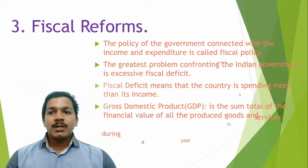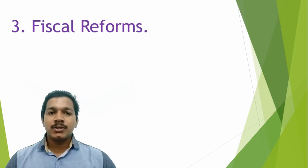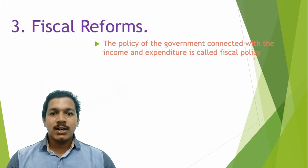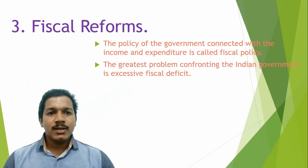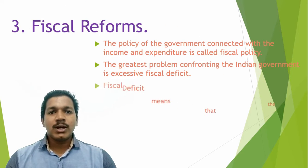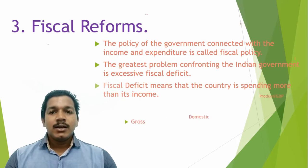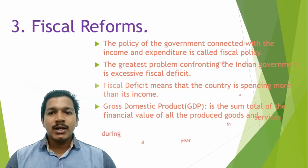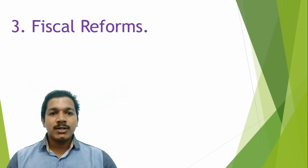Fiscal deficit means the country is spending more than its income. India, being a developing country, doesn't have sufficient income while expenditures are more. We need to understand what GDP is: the Gross Domestic Product is the sum total of the financial value of all goods and services produced during a year within a country. Fiscal deficit is calculated as a percentage of GDP, and in 1991, India's fiscal deficit was 3.5% of GDP.